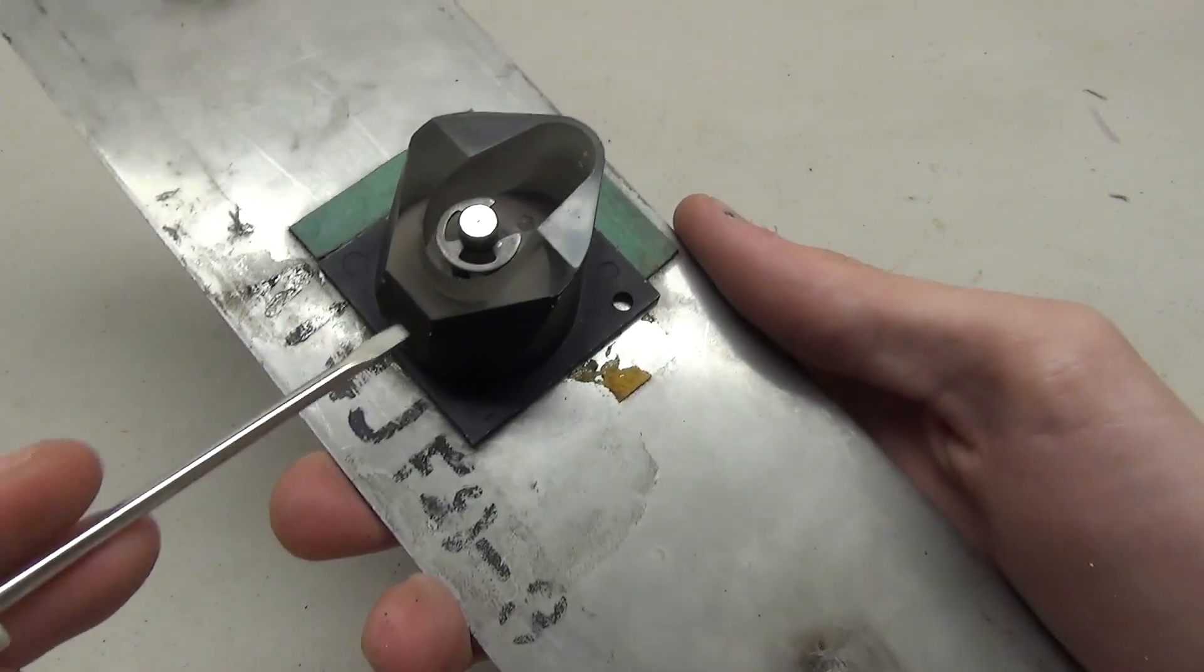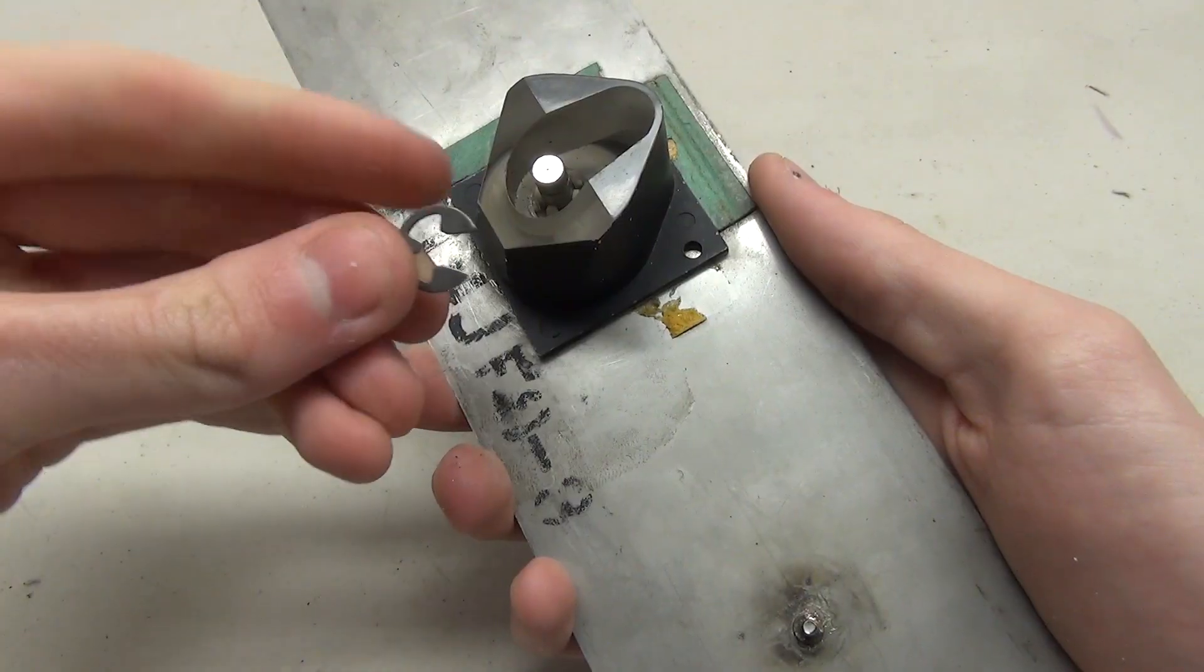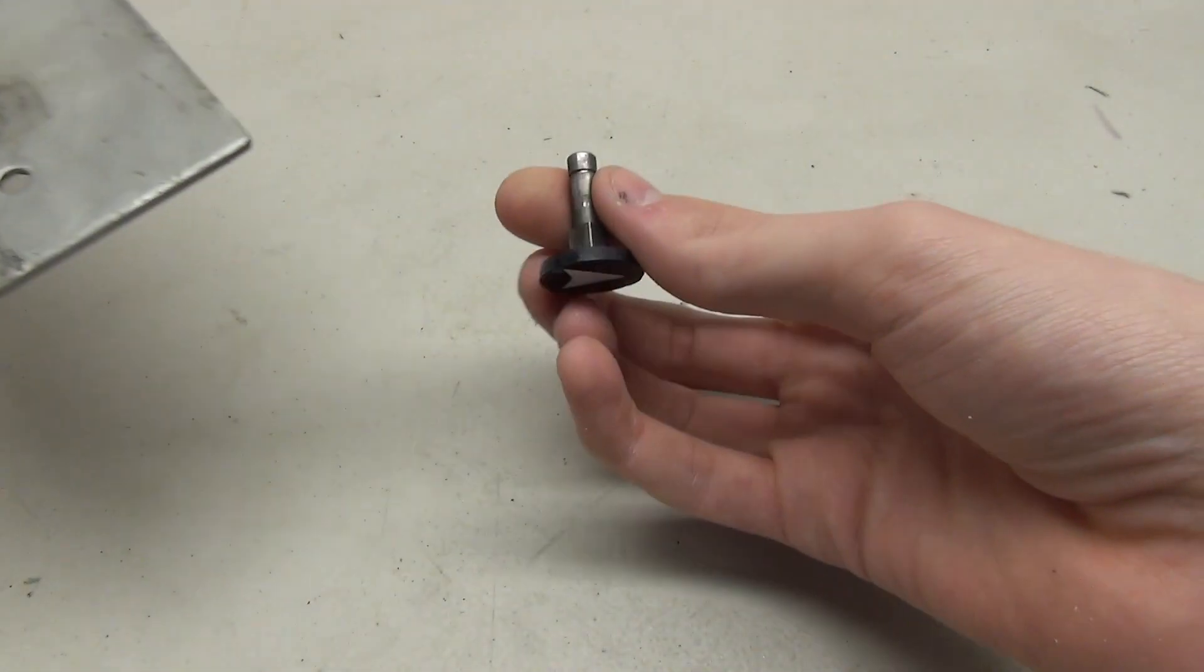Now in order to take this thing out, you'll notice there is this little clip and you have to pull that off, just like that. And when you do that, you can take the button out.